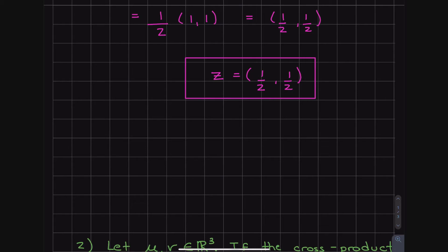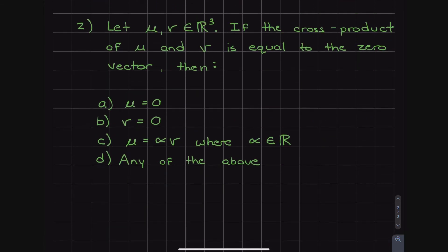The second question is a nice multiple choice — and get used to multiple choice, because the midterm and final are all multiple choice. It says: let u and v be vectors in R3. If the cross product u × v equals the zero vector, then: a) u = 0, b) v = 0, c) u = α·v where α is some scalar, or d) any of the above.